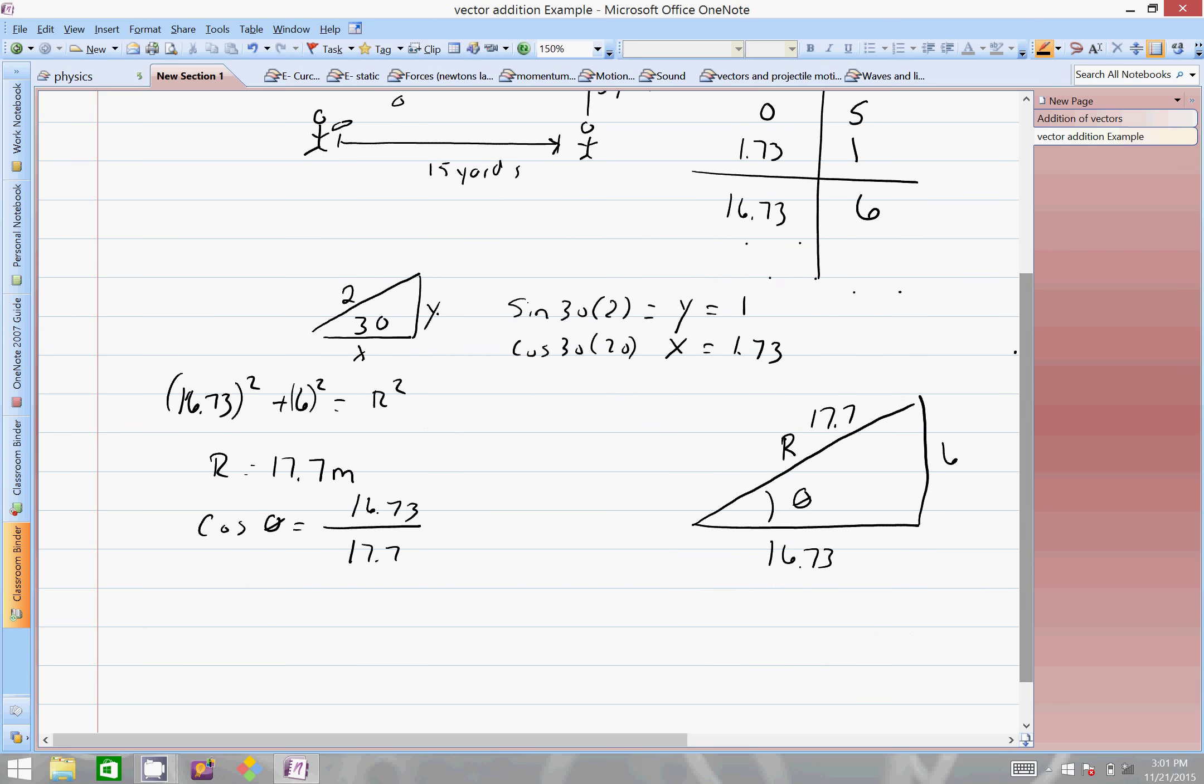And at this point, 0.93—the pen's not working here it looks like—but the inverse cosine of that equals 19.05 degrees. And that would be 19.05 degrees, and our angle here would be... there we go. So 19.05 degrees.